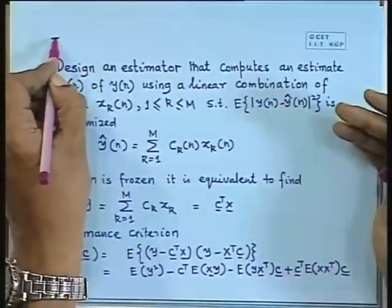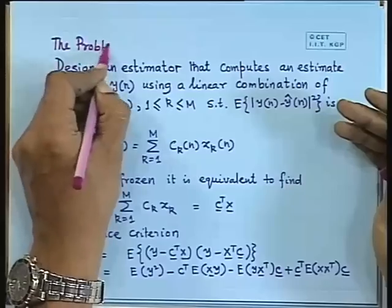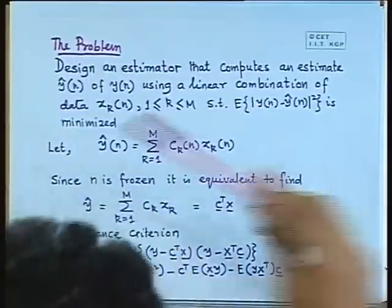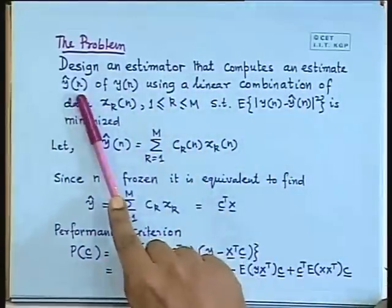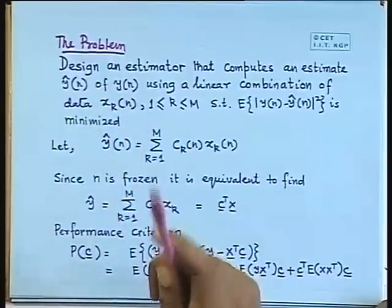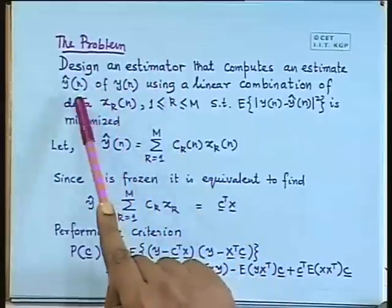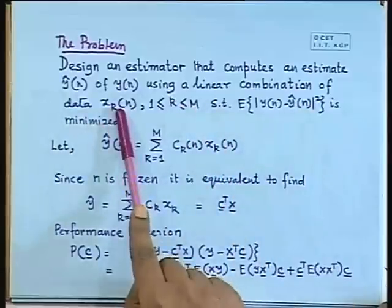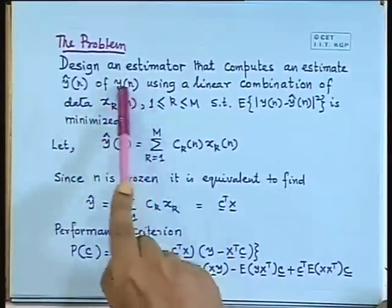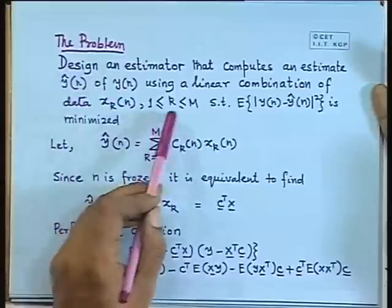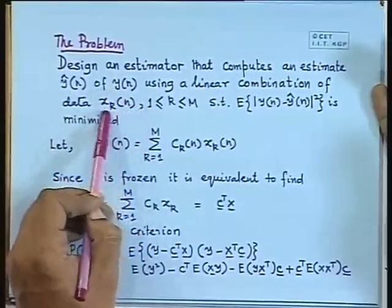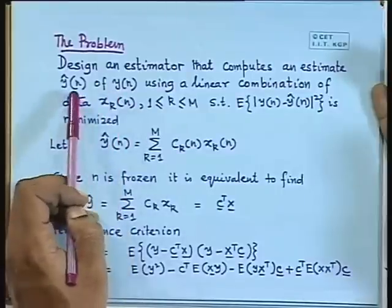We consider the problem initially in a general setting and then show it can be applied in several practical cases. The problem is to design an estimator that computes an estimate y-hat(n) of y(n). y(n) is the signal we want to estimate but cannot measure directly. We produce an estimate y-hat(n) using a linear combination of data — k measurements, where k varies from 1 to m, each at different sampling instances — and generate the estimate y-hat(n).